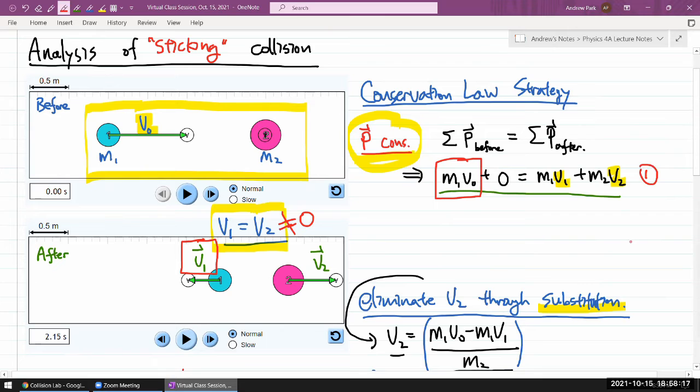then what I have from this information that two things stick together is that I don't have to write out this after collision picture with two different velocities. Instead of having V1 and V2, it's just going to be V1 and V1 or simplifying it even further, it's going to be M1 plus M2 times V1. Then it's really simple. I have one unknown, one equation. I can solve for it.